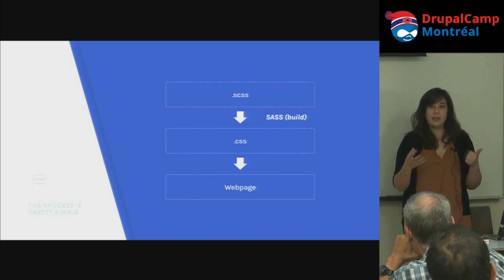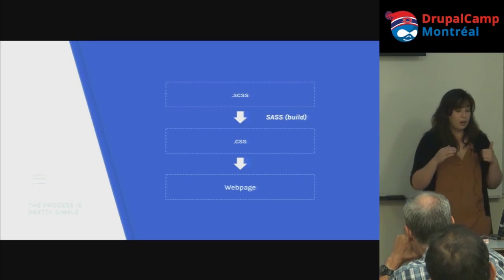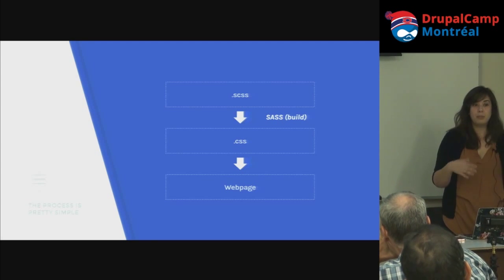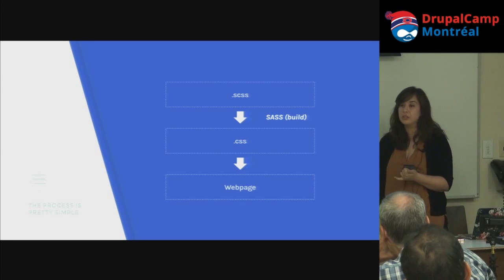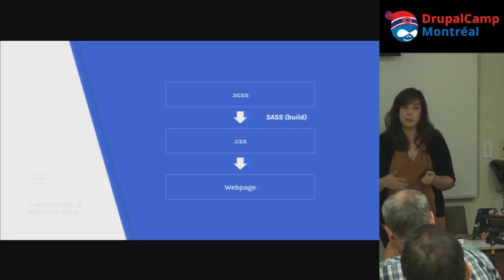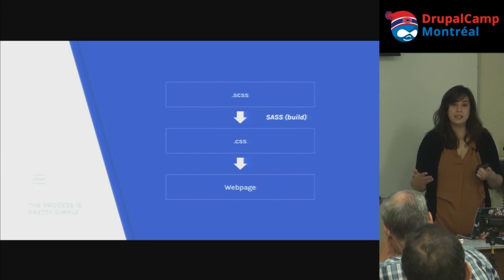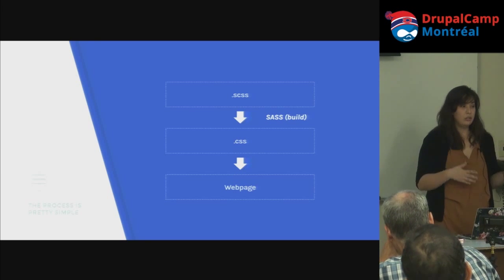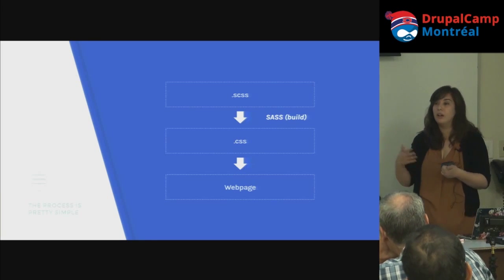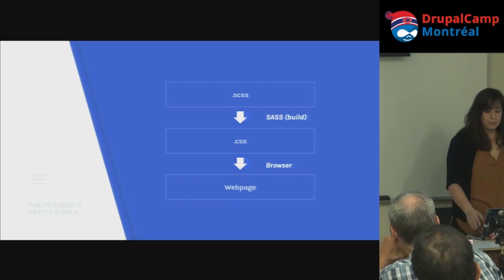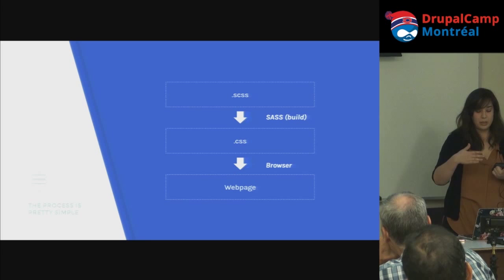Sass and CSS preprocessors in general are part of a build process. You're building locally and then putting it on a server — your Sass files get compiled into CSS. You would never have your Sass files on production. The browser sits between the CSS file and the web page.